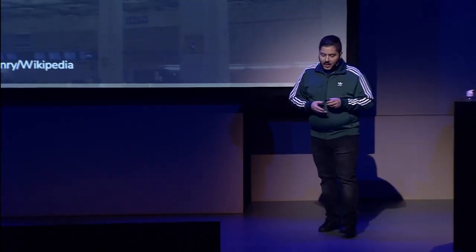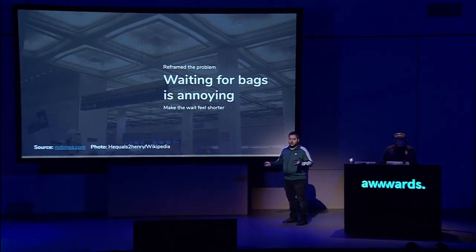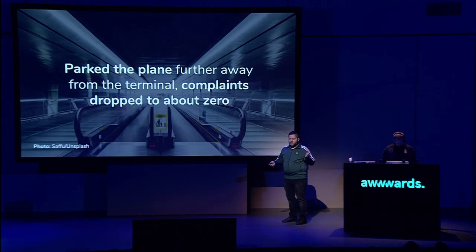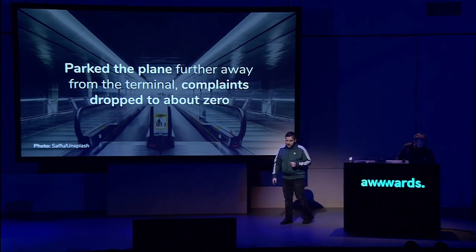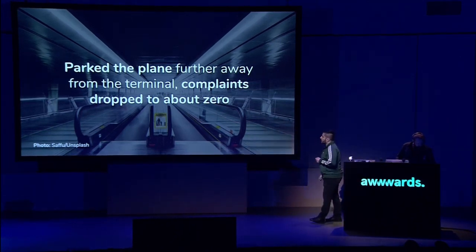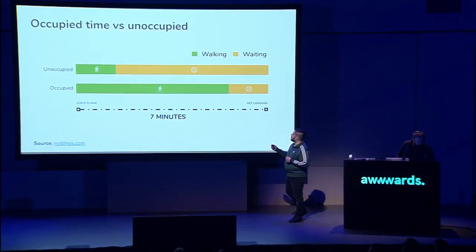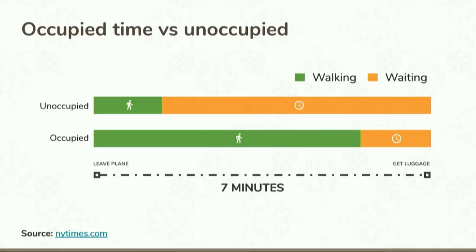So they reframed the problem. It's not so much the speed — it's more that waiting for the bags is annoying. What they discovered was the planes parked really close to the terminal building. So they thought, what would happen if we parked the planes further away? And complaints dropped to zero. Seven minutes divided up: the first minute you're walking to the terminal building, then you're waiting forever for your bags. Reverse that — six minutes you walk in, one minute you're waiting, and magically your bags appear. If there's anything you remember, this story is great at dinner parties.